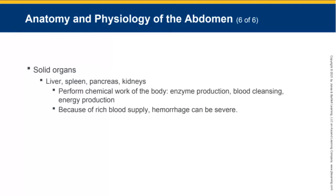The solid organs are the liver, spleen, pancreas, and kidneys. They perform the chemical work of the body, producing enzymes, cleansing the blood, and aiding in energy production. These organs have a rich blood supply, so once they are damaged, significant bleeding can occur. Solid organs injured will very likely produce severe bleeding.